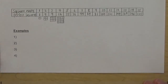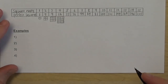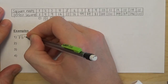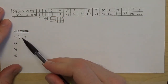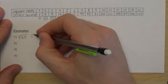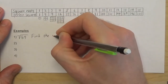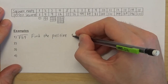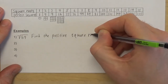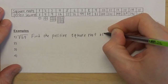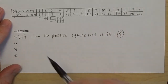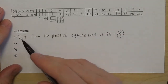Let's look at a few things you'll see throughout today's practice problems — some symbols you need to know. If you see the radical sign with 64 inside, that's asking you to find the positive square root of 64. Write: find the positive square root of 64. That would be 8, because 8 times 8 equals 64.